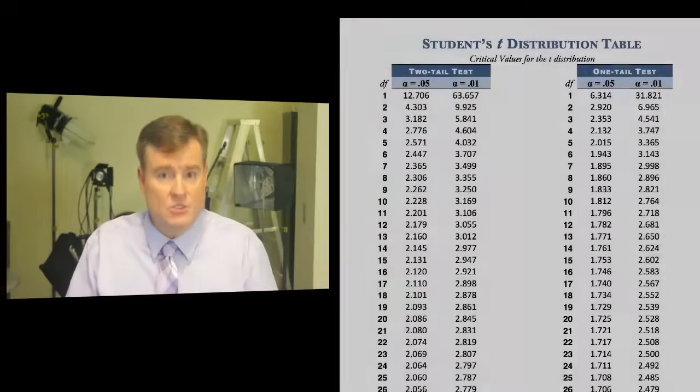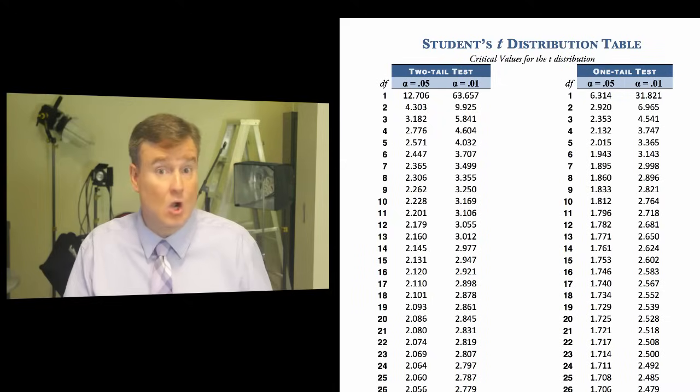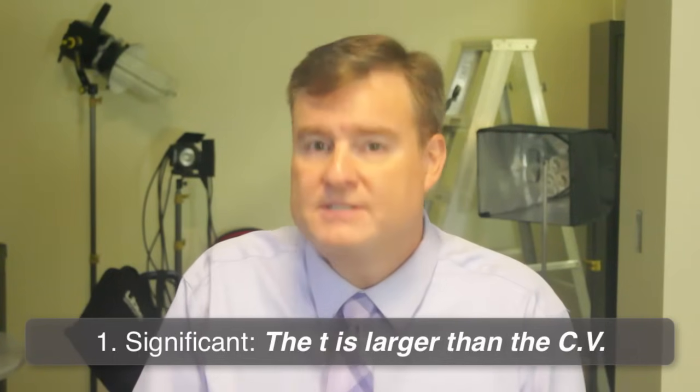There are three ways that we can determine if one mean is statistically significantly different from another mean. The first is by looking at the t-value. We would go to a table called Student's t-table and look up a critical value. If the t-value is larger than the critical value from that table, then the means are different.